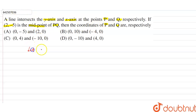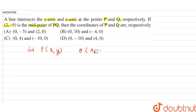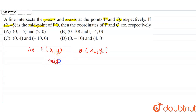Let the coordinates of point P be (x1, y1) and the coordinates of Q be (x2, y2). We know that the midpoint of PQ is given as (2, -5). Let's call this midpoint K, so the coordinates of K are (2, -5).